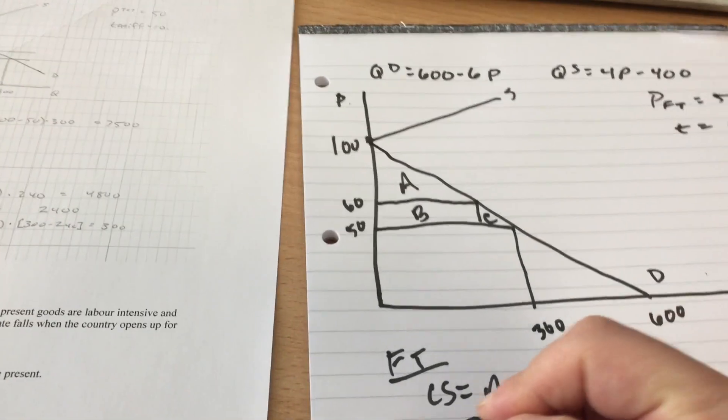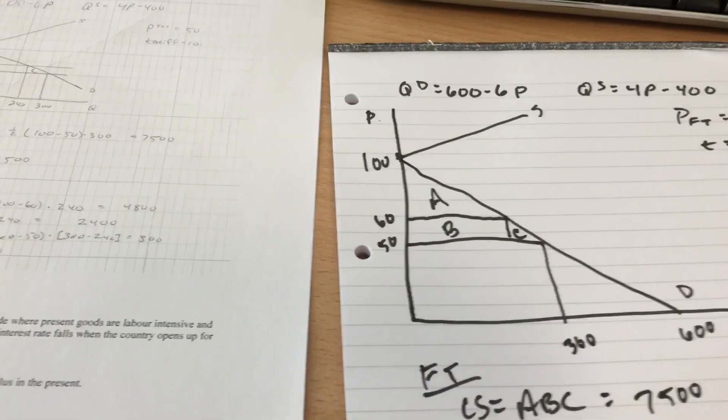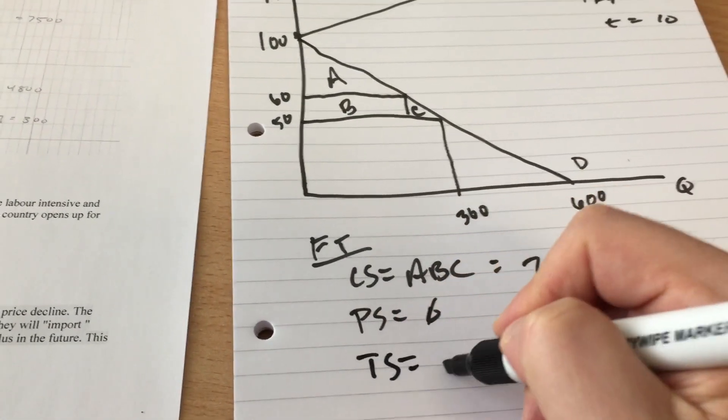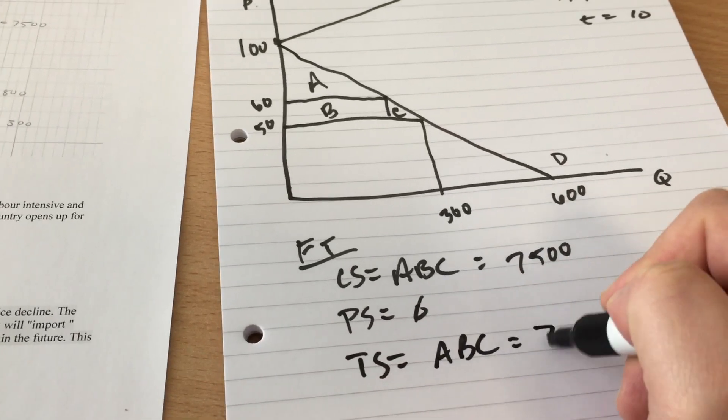So what's producer surplus? Well that's just zero because producers don't actually make any. So total surplus is going to be A, B, and C, or 7,500.